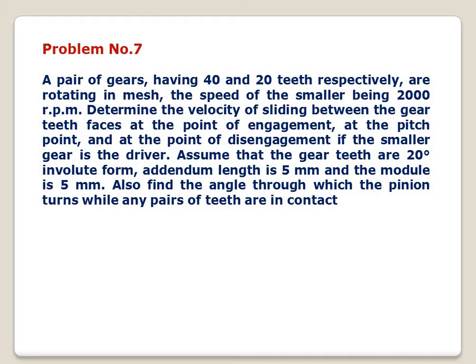The smaller gear is the driver. Gear teeth are 20 degree involute form, so phi equals 20 degrees. Addendum length is 5 mm, and module m equals 5 mm. We also have to find the angle through which the pinion turns while any pair of teeth are in contact. So the findings are: first, velocity of sliding at three conditions — point of engagement, pitch point, and disengagement; and second, the angle through which the pinion turns while any pair of teeth are in contact.